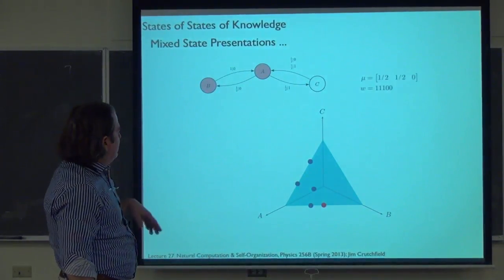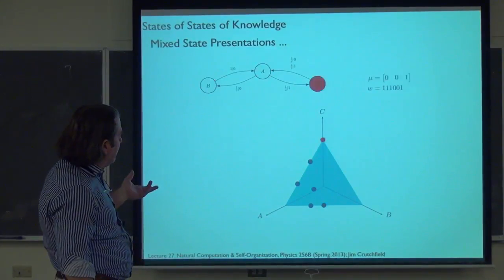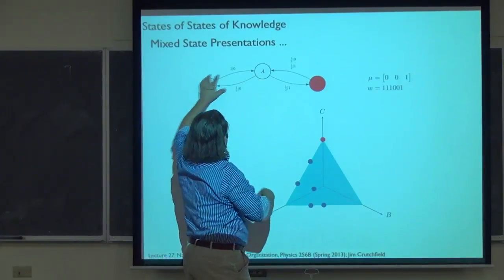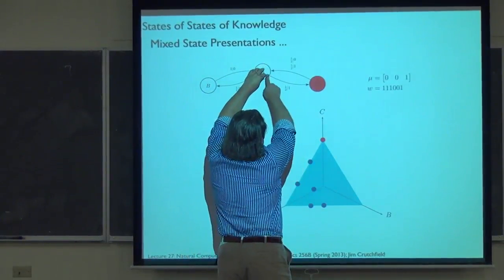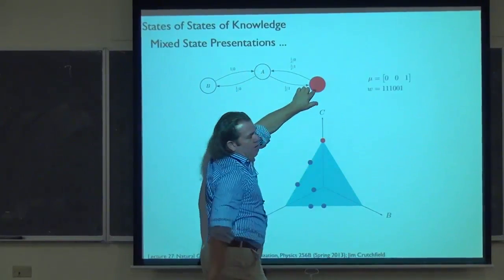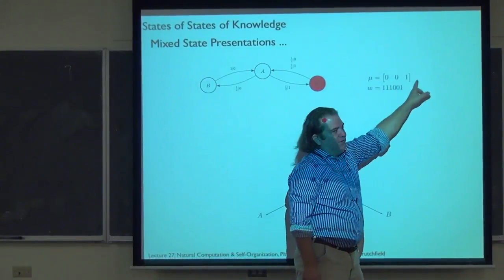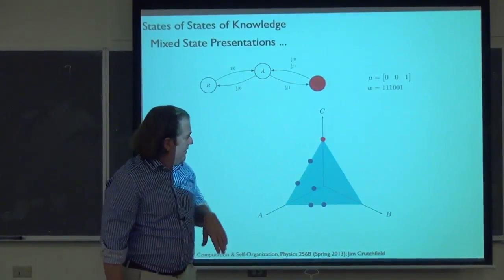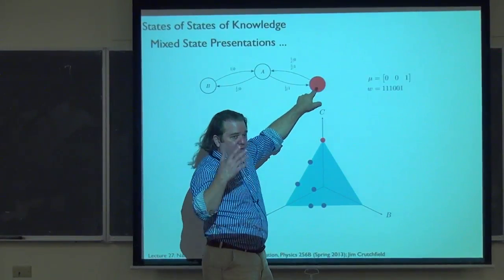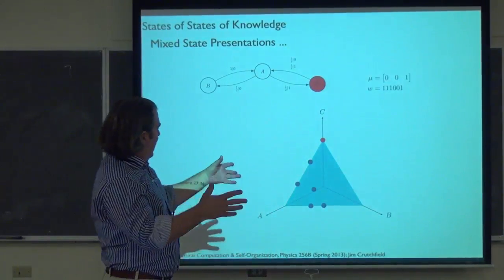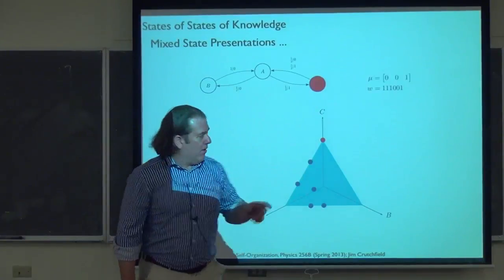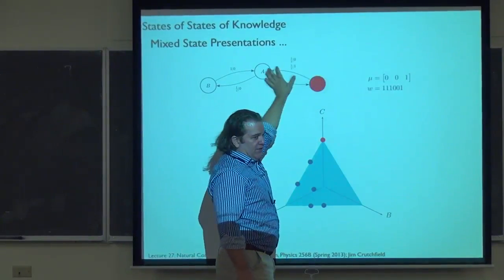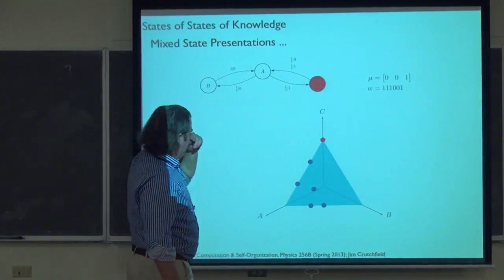The next symbol is a one. We had A and B with positive probability, but there's nothing leaving B on a one. So that doesn't participate. Whatever probability was in A, we take half of that down to C. C is the only one that has probability; when we normalize, we get a delta function on C. The mixed state moves to one of the vertices. This is the visual picture of what it means to finally have synchronized — having seen that sequence from state ignorance, we now know exactly what state we're in. We call this a synchronizing word.